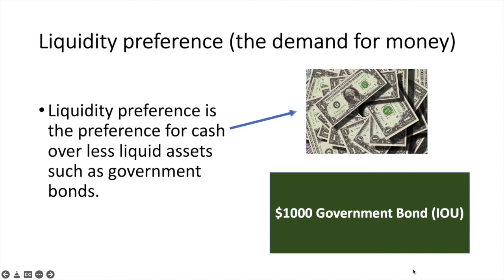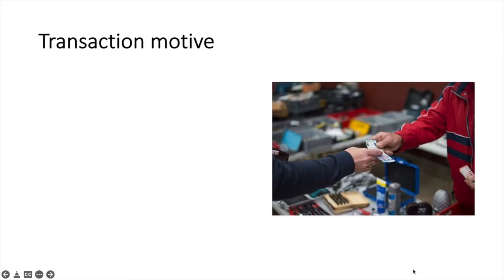Liquidity preference is a preference for cash over less liquid assets such as government bonds. Individuals will choose to hold cash as opposed to other financial assets for three key reasons. We'll now explore each of these in turn.